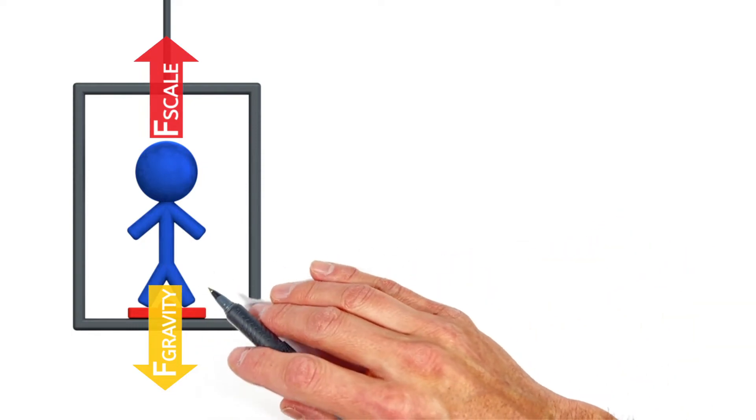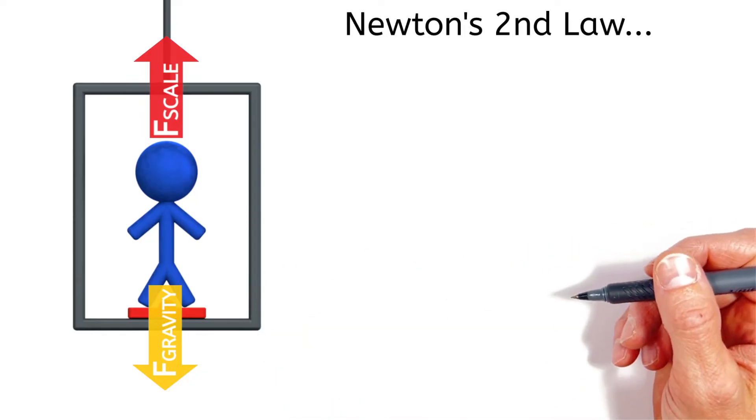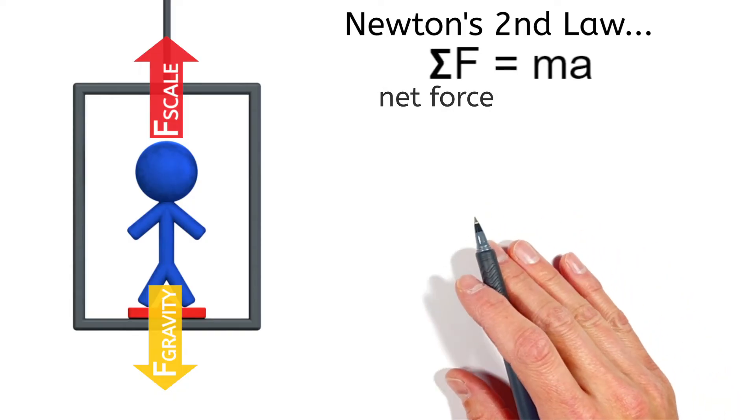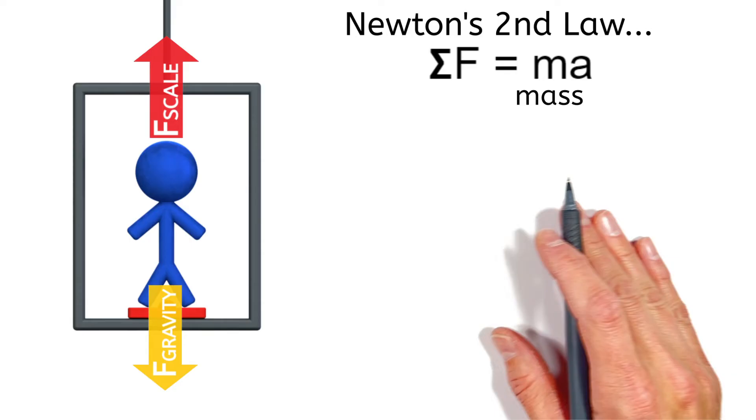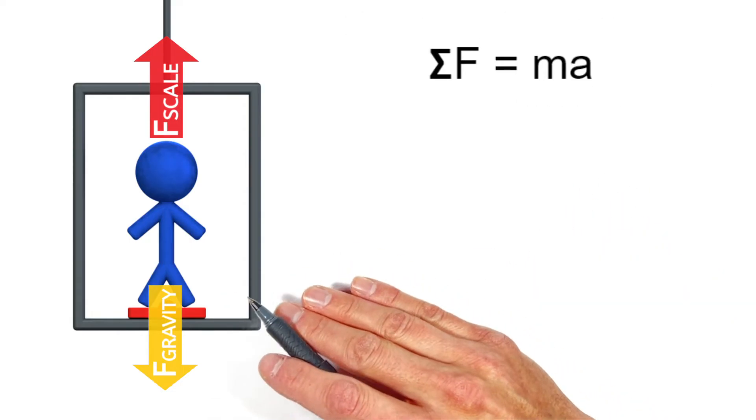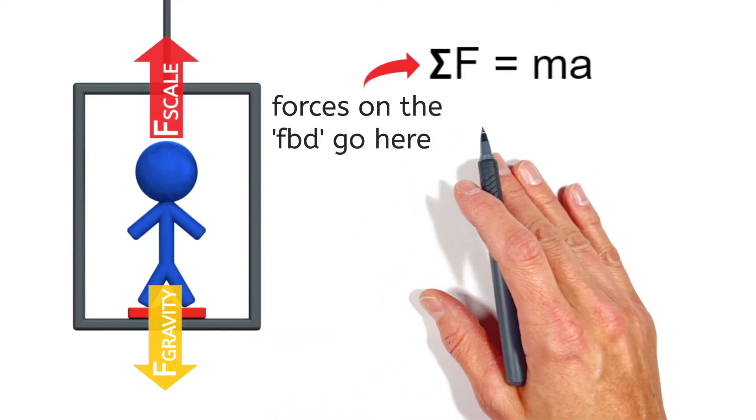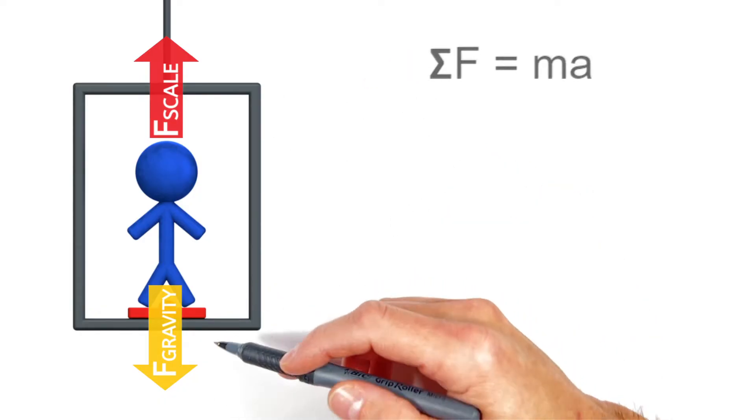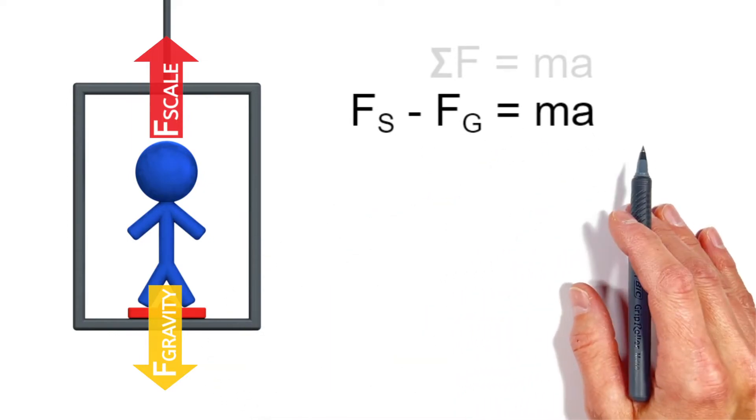Now the whole point behind a free body diagram like this is that it helps us apply Newton's second law to the problem. See, the second law is an equation that says the net force or sum of all forces acting on an object is equal to that object's mass times acceleration. And a free body diagram is really just a picture of the left half of Newton's second law, or what we'd call the net force. So to solve for the reading on this scale, we're going to set the sum of these two forces equal to the person's mass times acceleration.